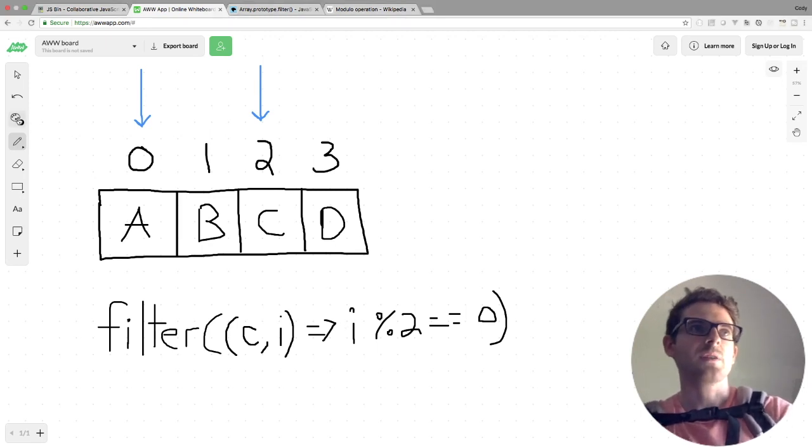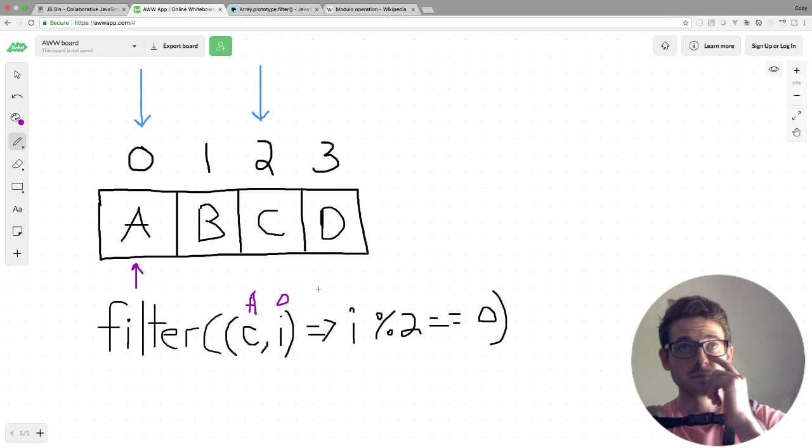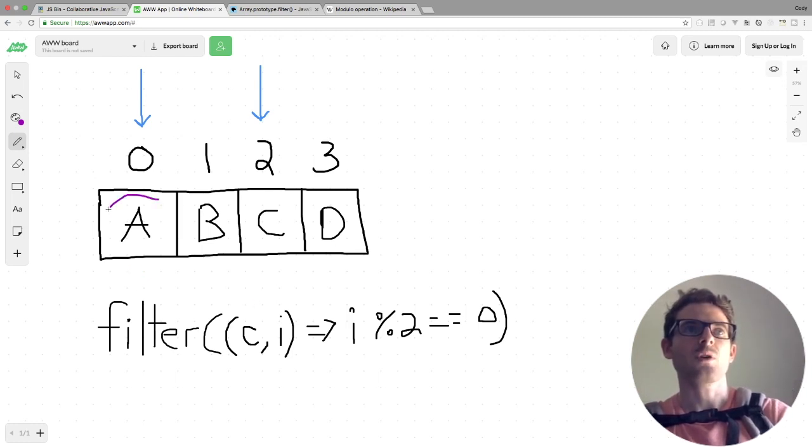Cool. So let's run through this code really quick and try to figure out what is going on. So first step is we're going to be looking at index 0, which the element is going to be A for character. And then i is going to be 0 for the index. So we're going to go over here and check, is 0 mod 2 equal to 0? And in this case, it is. So we're going to keep track of that element because it passed our filter callback. So this one's good.